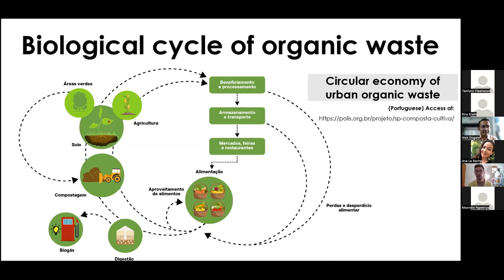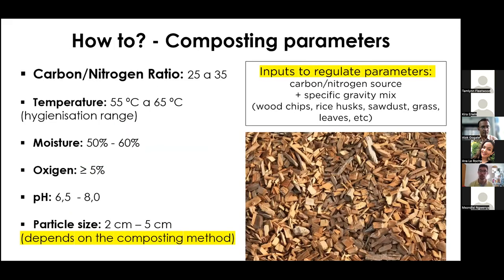Composting is quite important because it closes the loop of organic waste alongside anaerobic digestion, black soldier fly, and animal feeding technologies, returning organic matter and nutrients to soil. To do composting well, you need to regulate parameters so the organic matter stabilizes — mostly odorless — and produces a high-quality stable product. You control the carbon-to-nitrogen ratio and temperature.